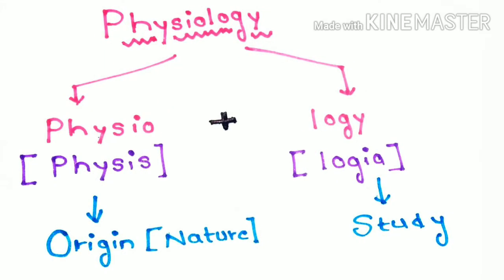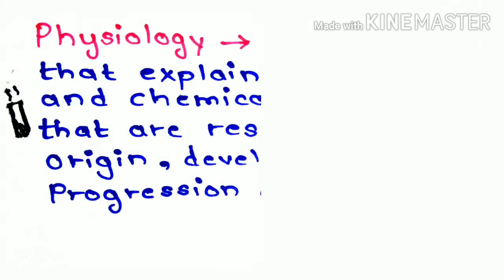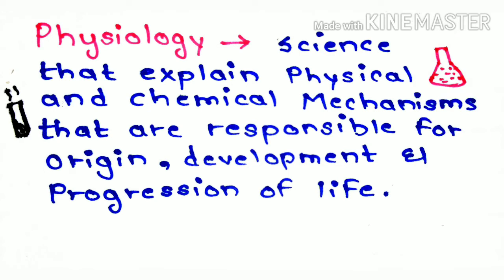Physiology is built up of two words, Physio and Logi. Physio meaning origin or nature and Logi meaning study. So, physiology is a science that explains physical and chemical mechanisms that are responsible for origin, development and progression of life.